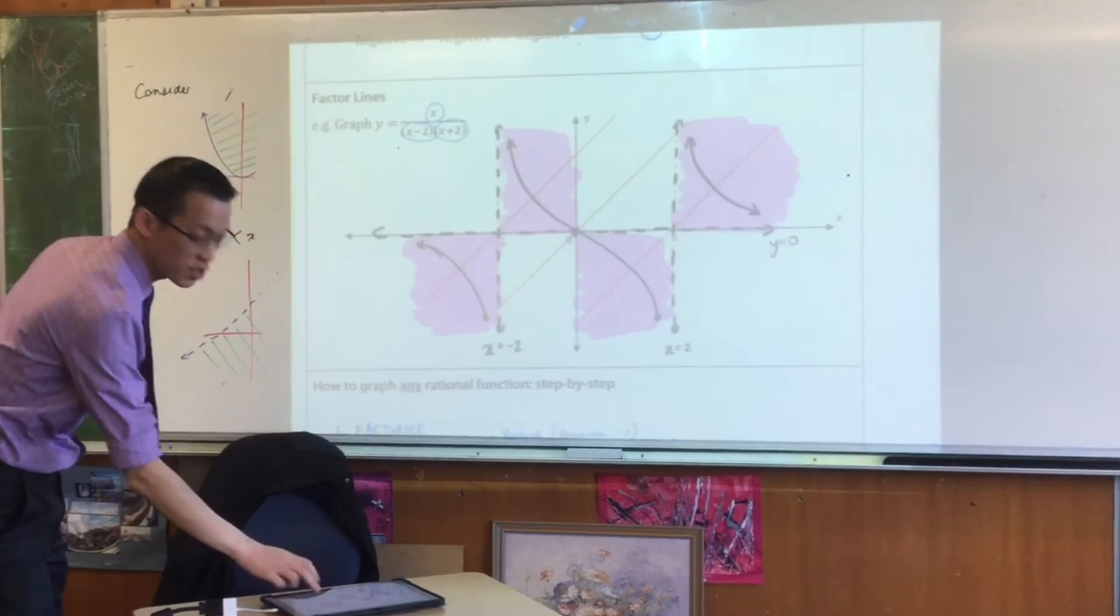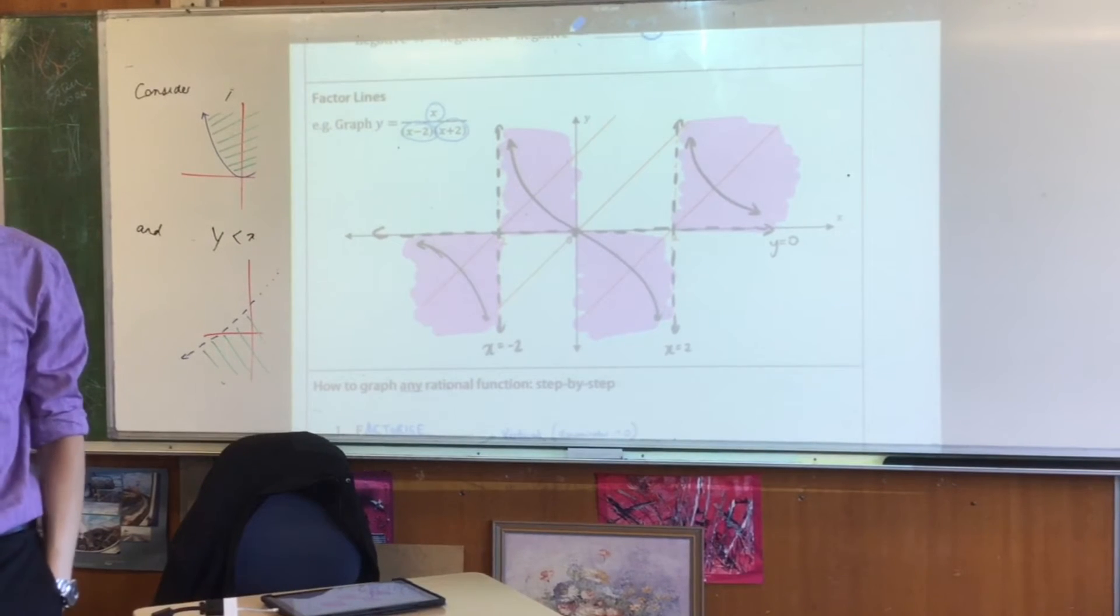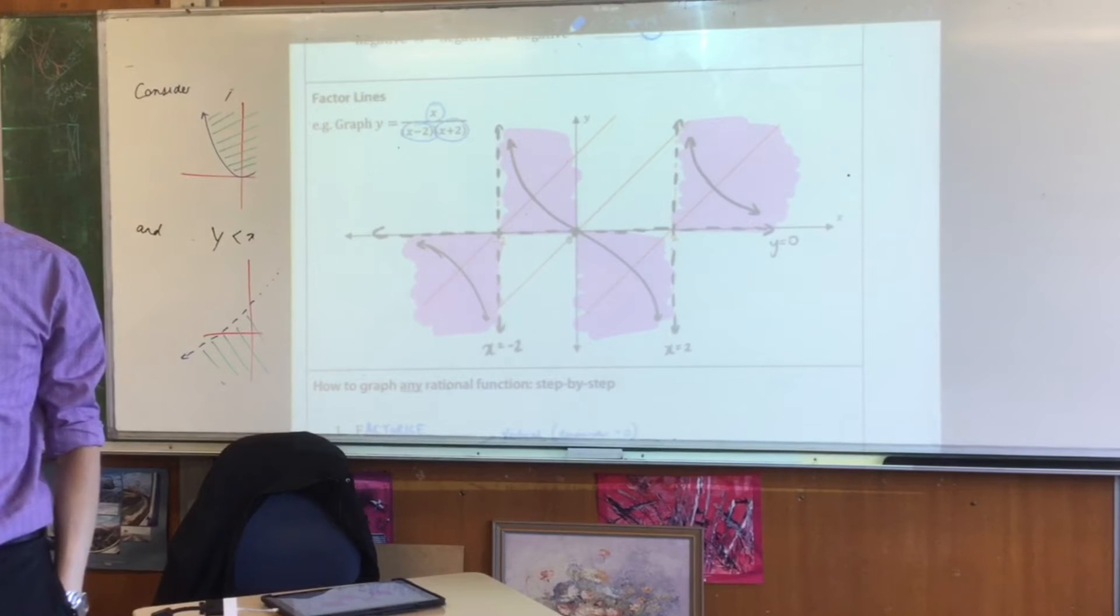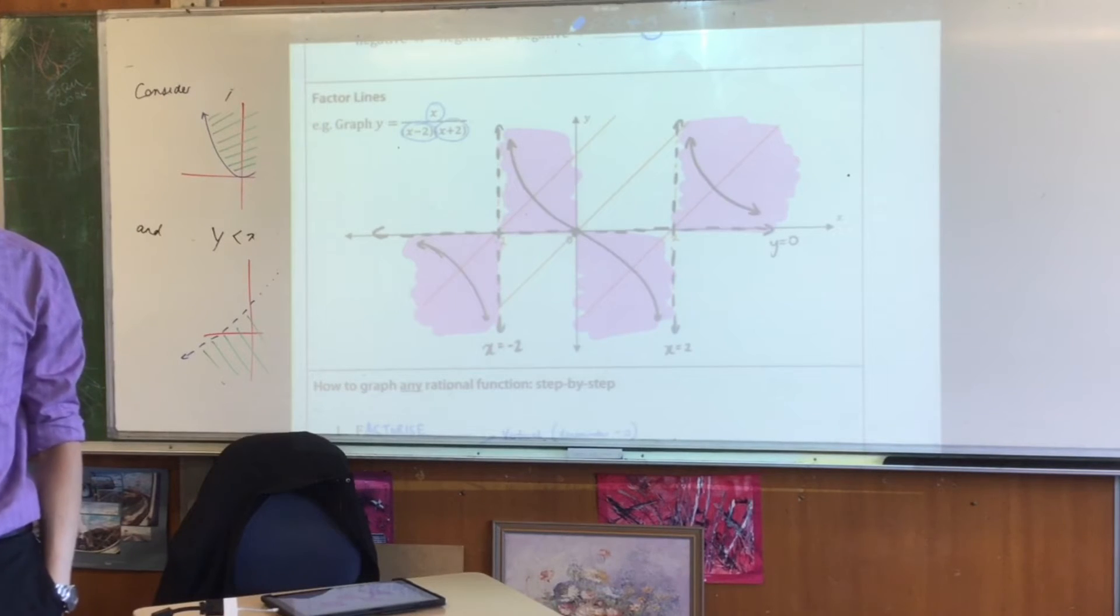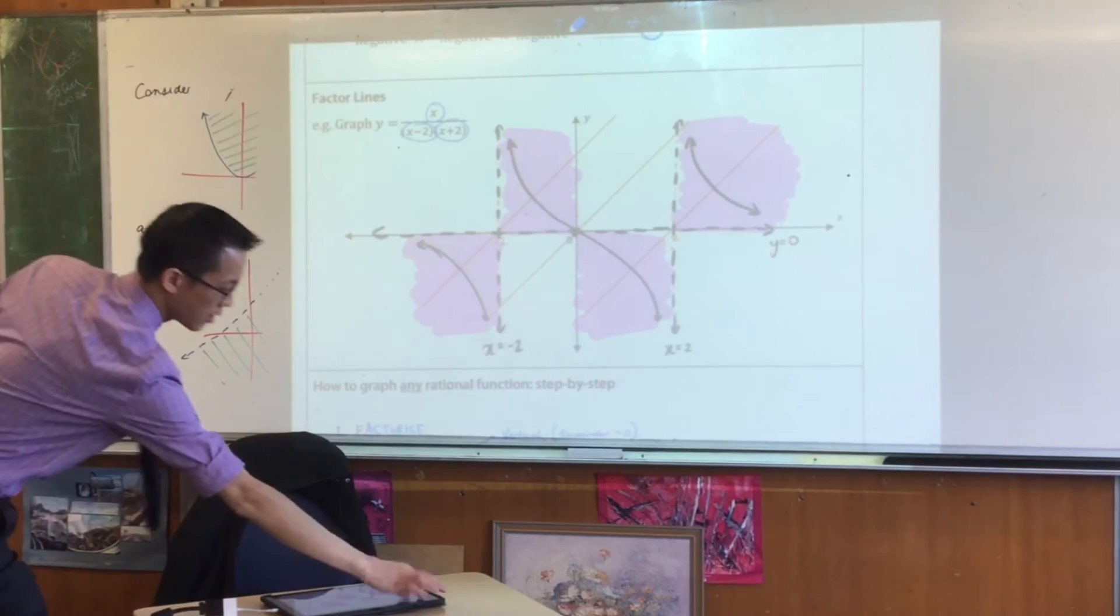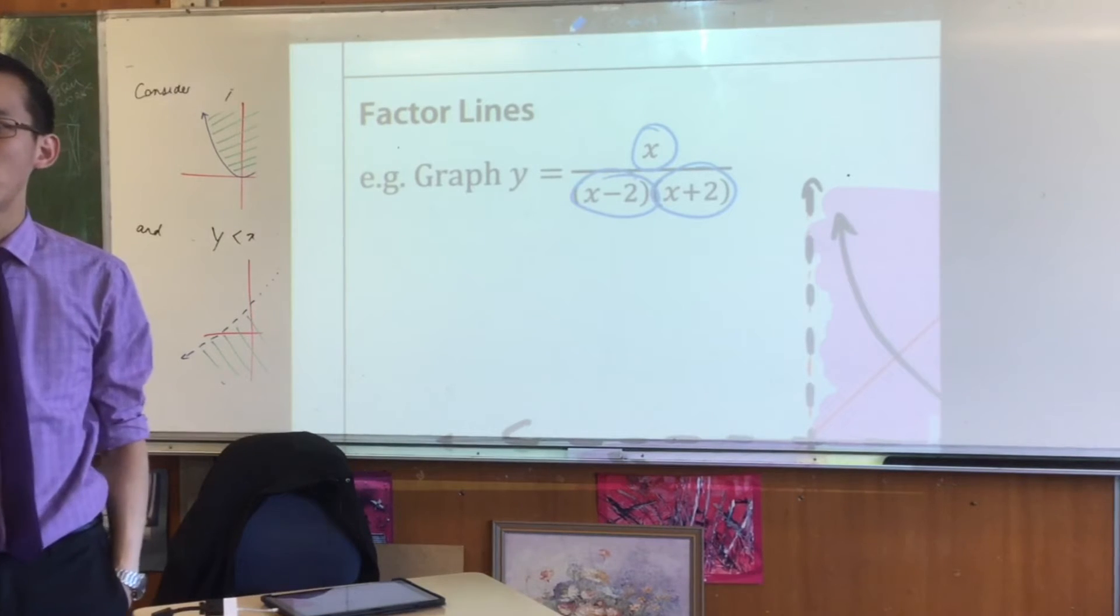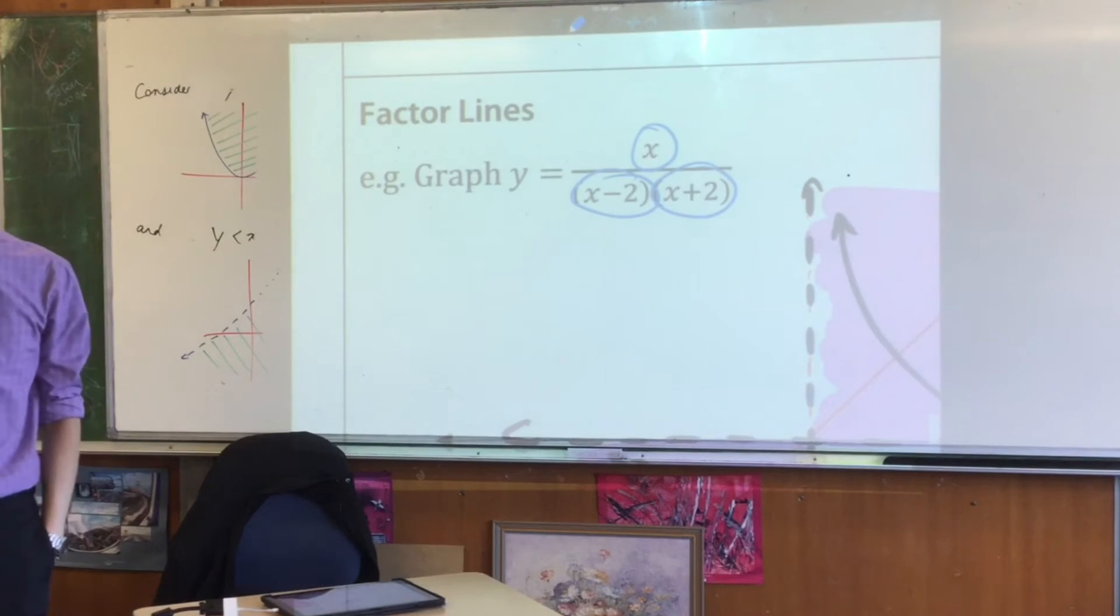Look at how we did it here. How did I do the regions here? What did I rely on? I drew some lines. I drew those orange lines that corresponded to the x, x minus 2, x plus 2. In other words, the factors. If you do the factors, that's why you have to factorize. Then you can draw those orange lines, and then off you go.